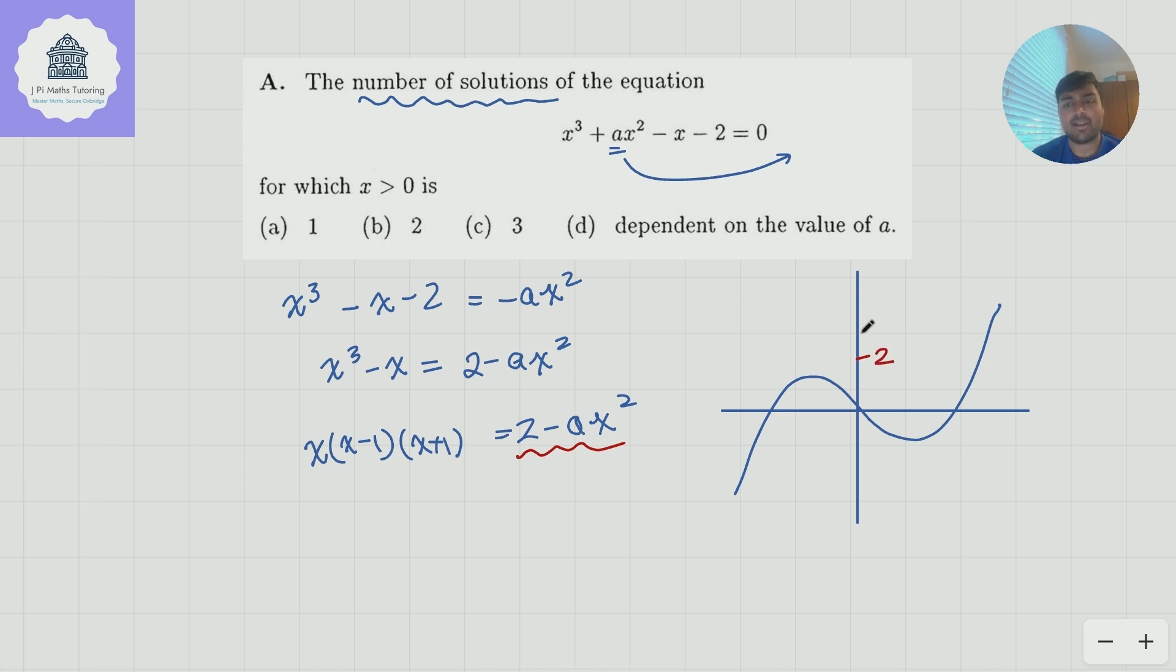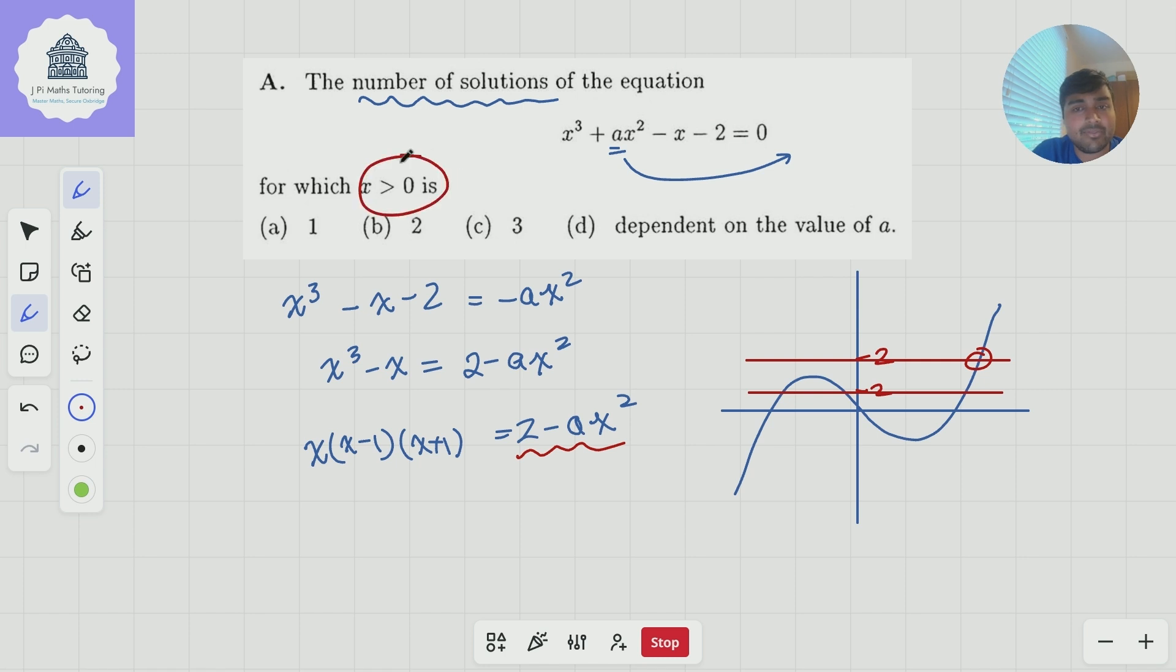And the idea is this is a parabola, provided a is non-zero. If a is 0, well, if a is 0, it's pretty clear we get one solution here. I mean, maybe 2 is down here, and you could say, well, maybe there's 3 solutions, but actually we don't care about any of the ones where x is negative. We're only interested in the solutions where x is positive. So there's clearly only going to be one positive solution. So immediately we can get rid of b and c.